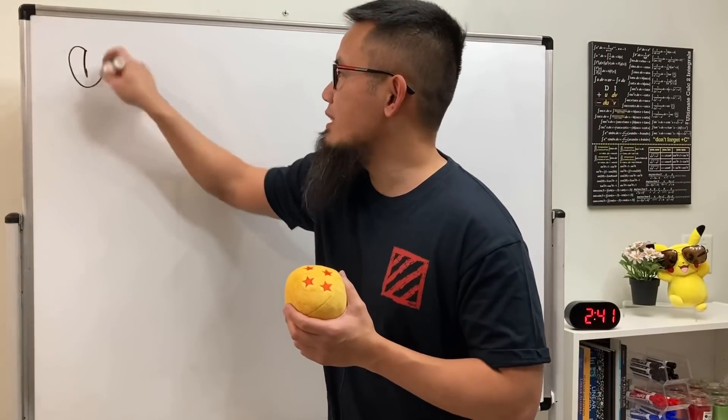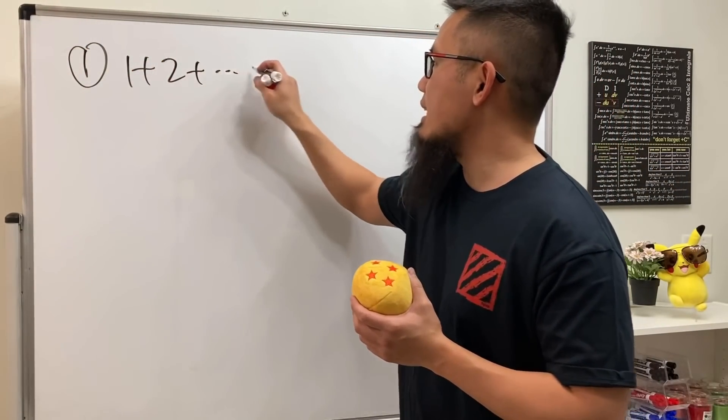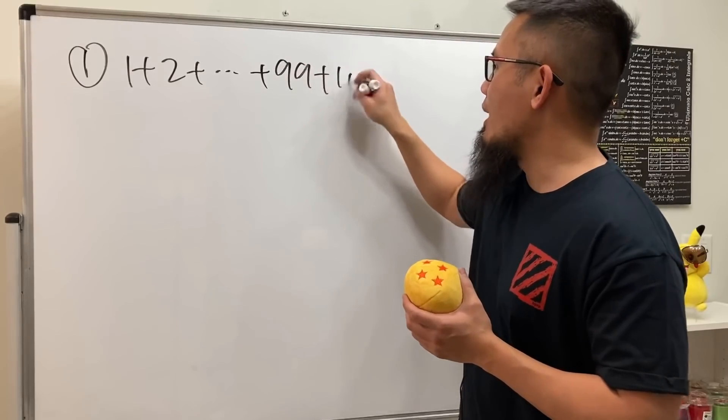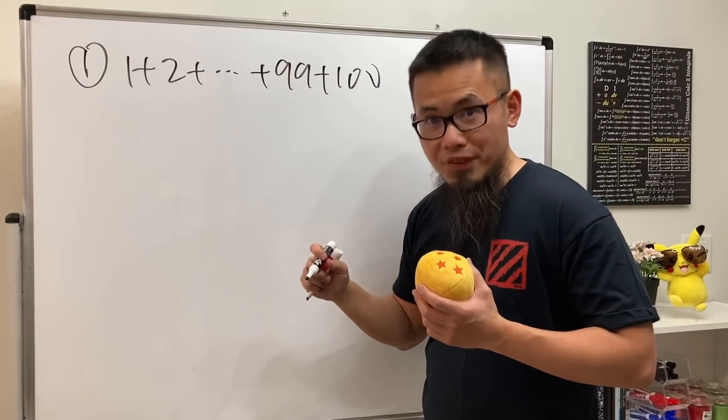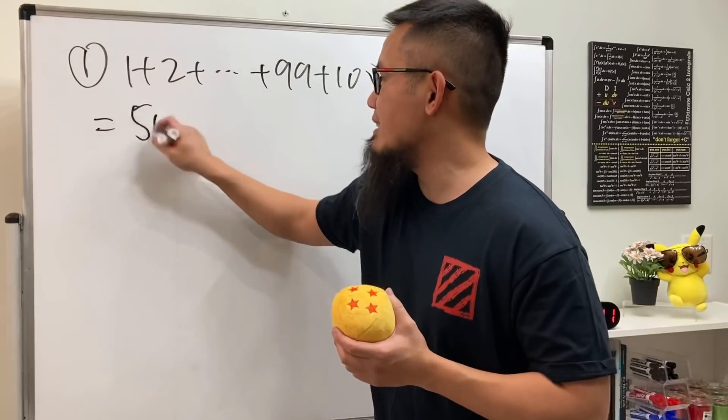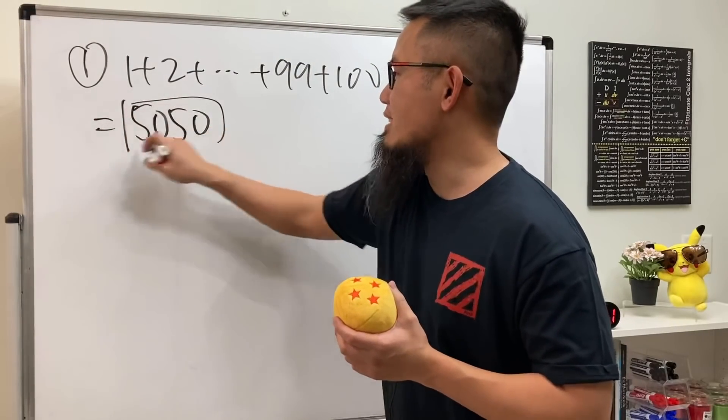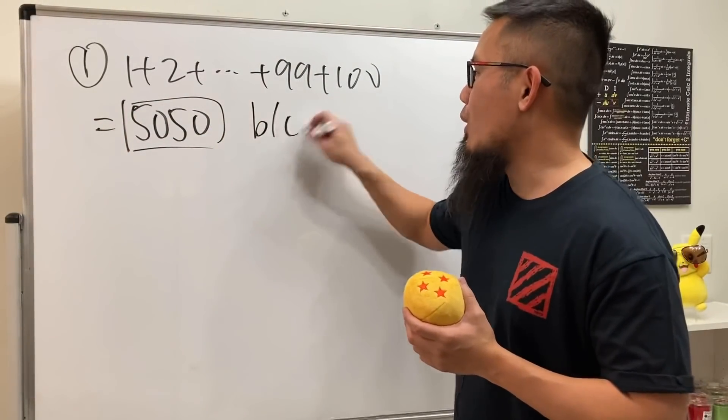I have two questions for you. Check this out. First question: what's the answer to 1 plus 2 plus... plus 99 plus 100? I will give you a 50-50. You got it already? Oh my goodness, I didn't even finish asking the question! I know, yeah, this is too famous, right?